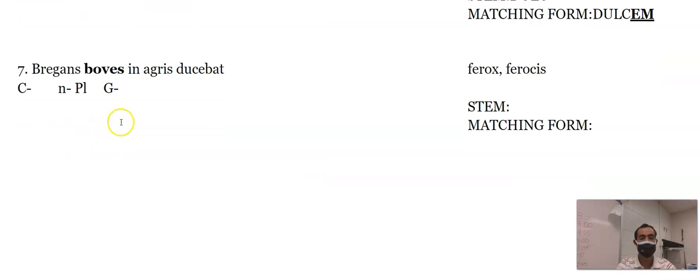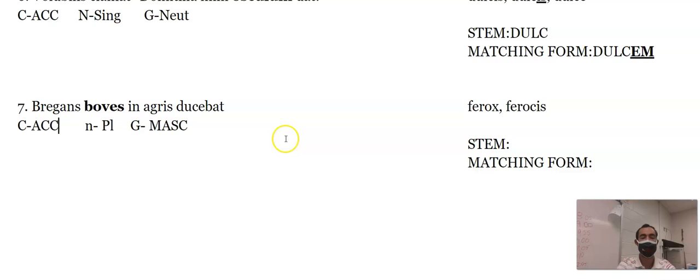Boves, these are masculine. But it's third declension, so the gender doesn't matter too much because third declension has all the genders. This one is accusative because Bregans is doing the action. Ferox is a third declension. The stem for this one is feroc. And then the matching form would be ferocem, boves feroces.